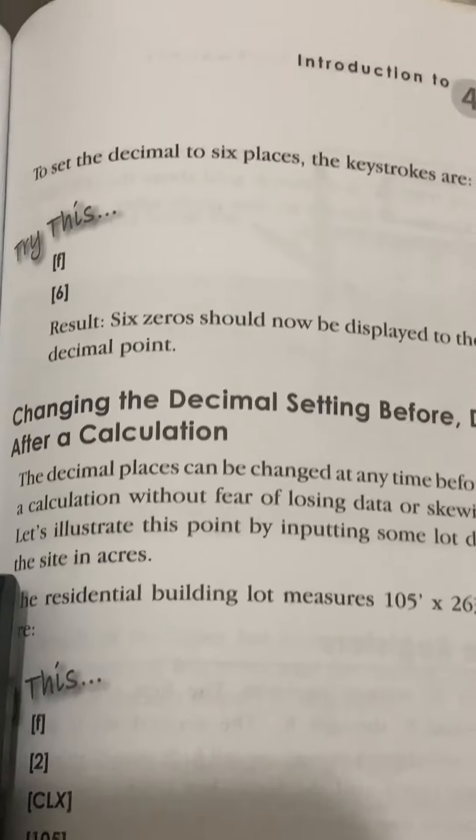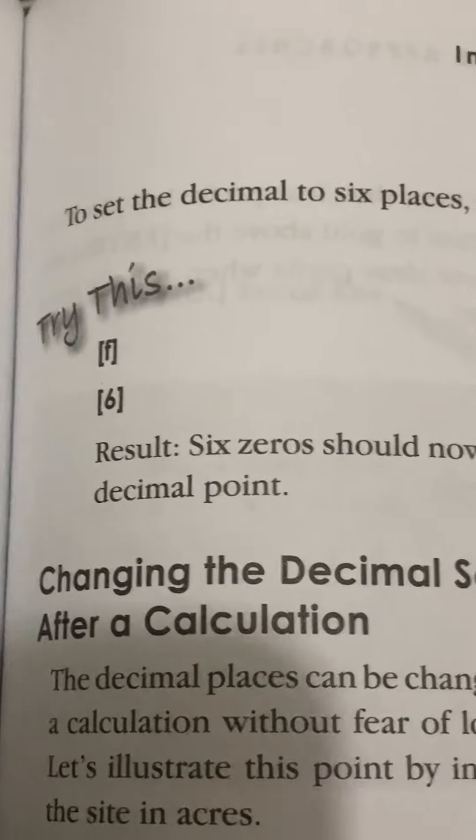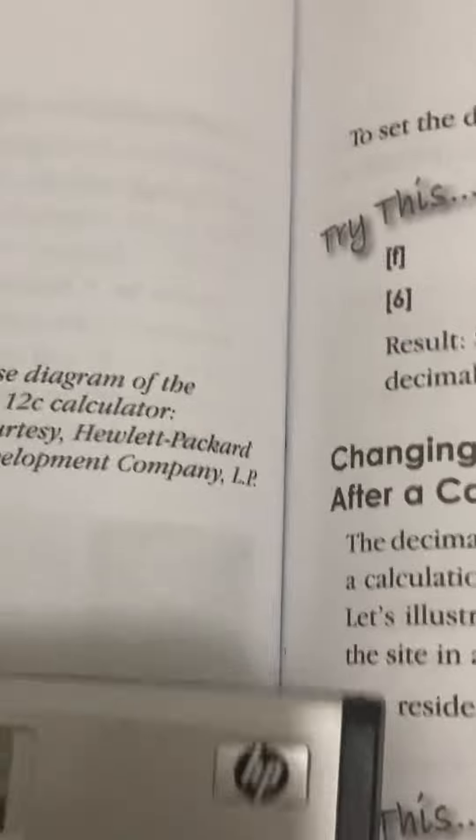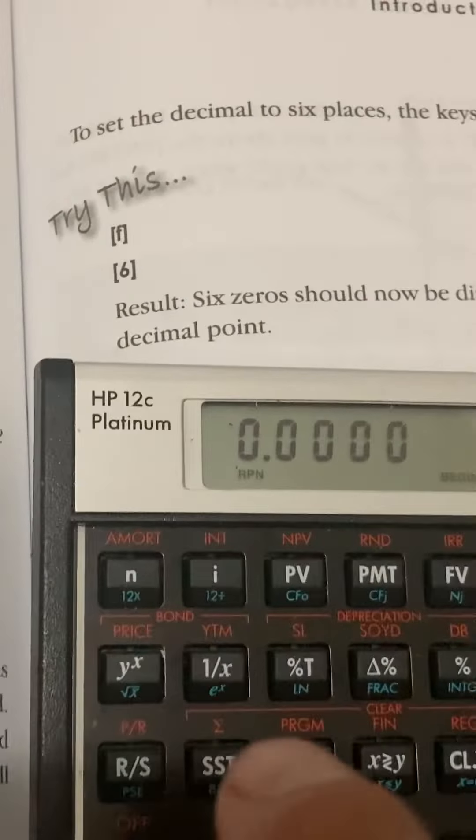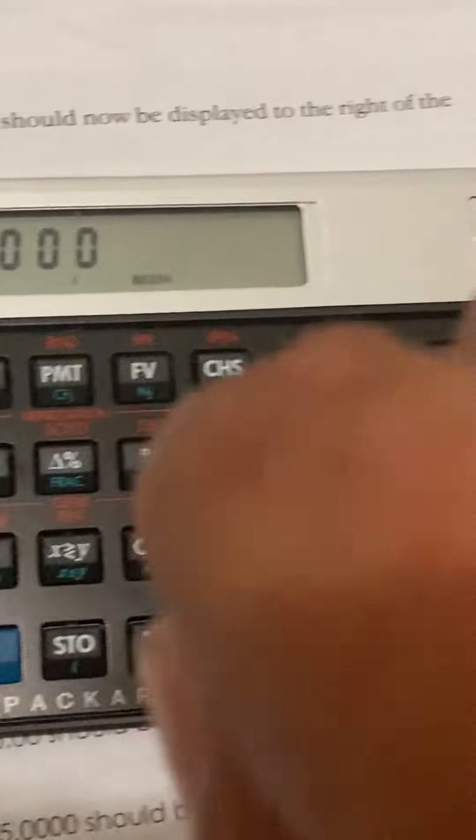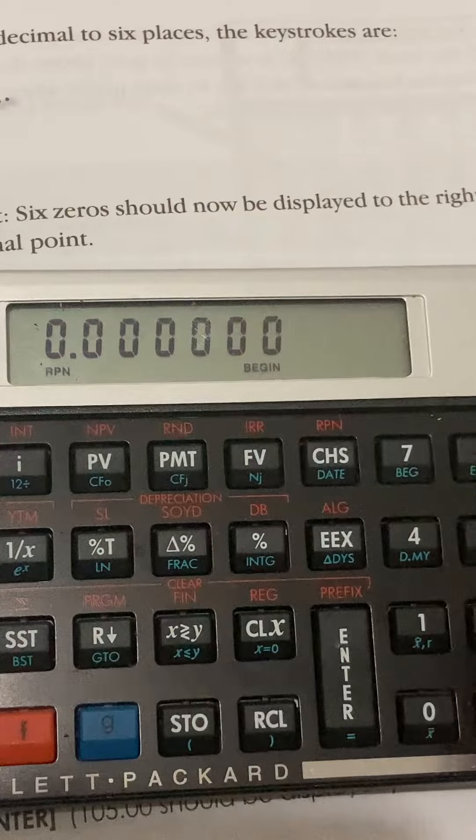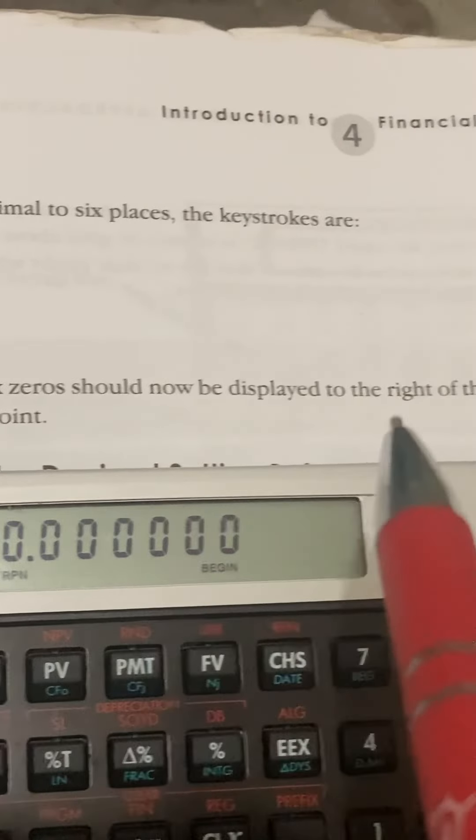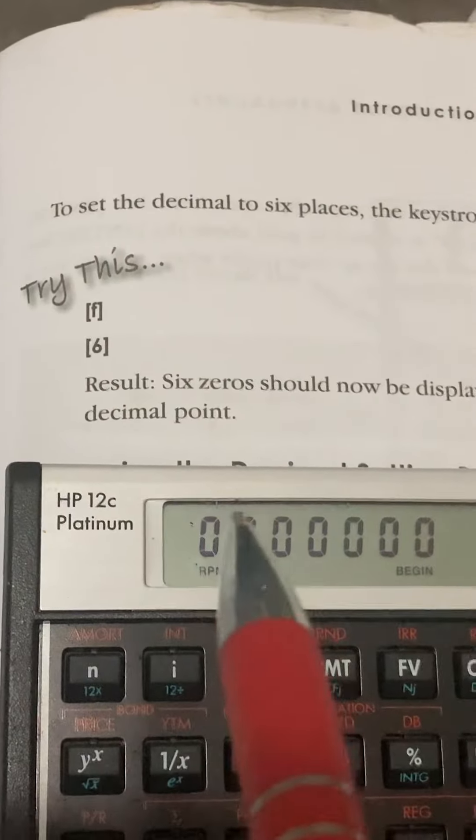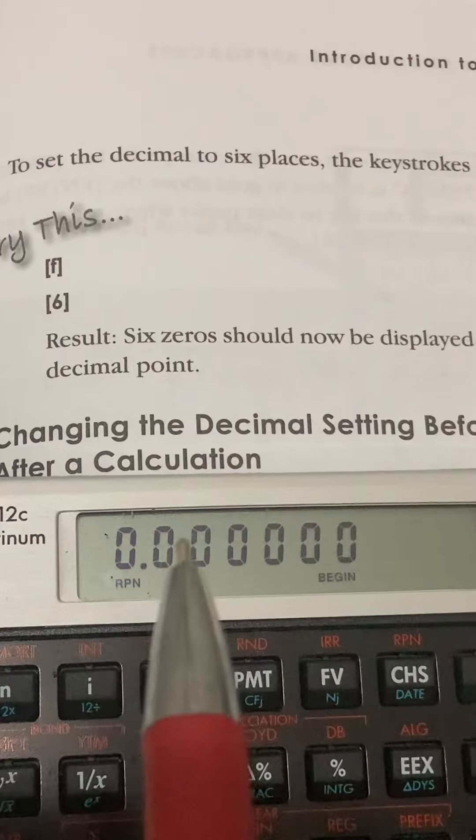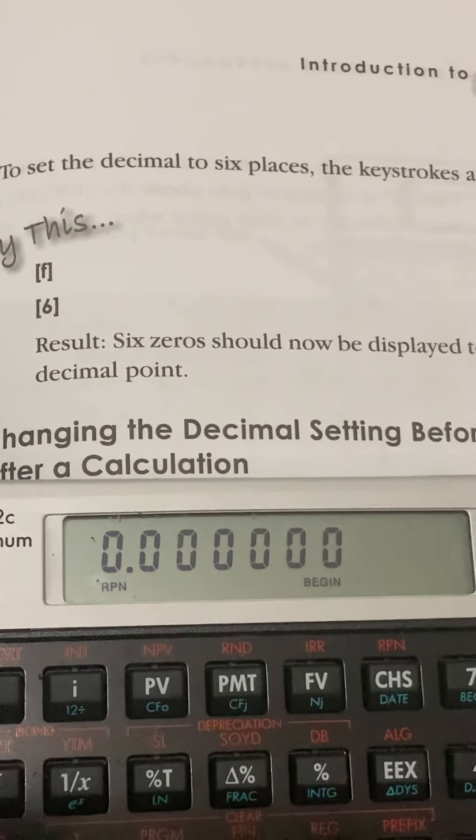Page 125. To set the decimal to six places, the keystrokes are: Try this. Press the letter F. Once again, it'll appear. Press the number six. Result. Six zeros should now be displayed to the right of the decimal point. Here's your decimal point. Now you have one, two, three, four, five, six zeros by doing that.